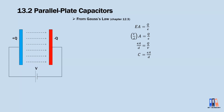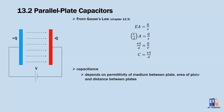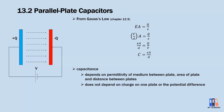From this formula, we can see that the capacitance of a capacitor depends on the permittivity of the medium, the area of the plate, and the distance between the plates. It does not actually depend on the charge or the potential difference between the plates.